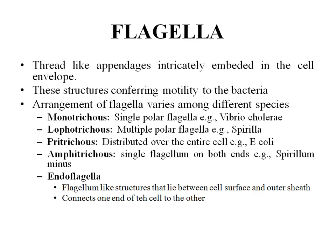The next cellular appendage we deal with is the flagella. Flagella are thread-like appendages intricately embedded in the cell envelope and cell membrane. This structure confers motility to the bacteria. Based on the position of the flagella, we can classify them into various different types. For example, if the flagellum is at one single pole, it's called monotrichous — example is Vibrio cholerae.